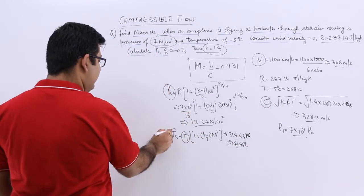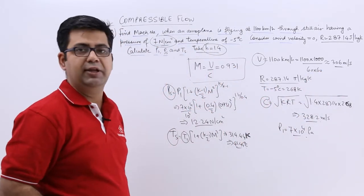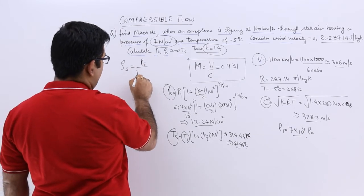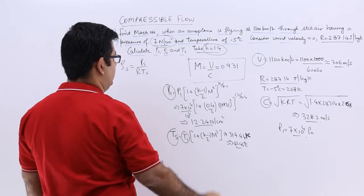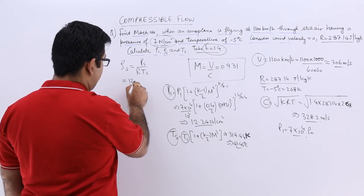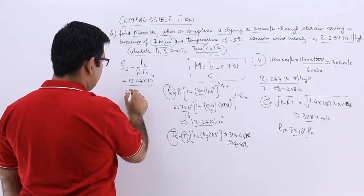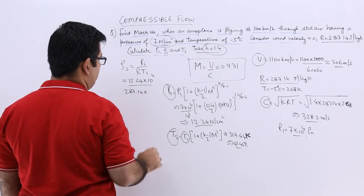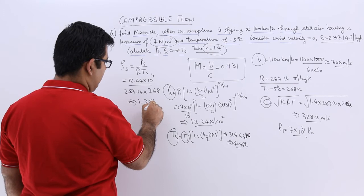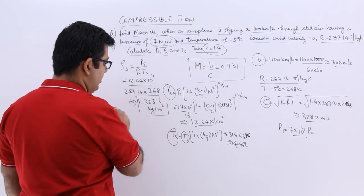Now pressure over here, temperature over here and the value of R known to us, we can easily find out the stagnation density. Stagnation density would be Ps upon R into Ts. So Ps is 12.24, 10 to the power 4 upon 287.14 into 268. This gives you a value of 1.355 kg per meter cube.